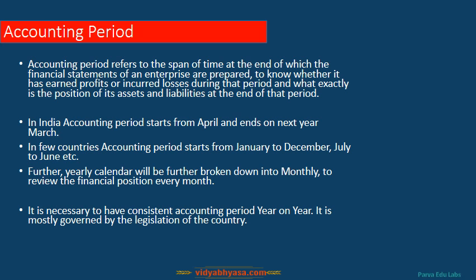The next concept is the Accounting Period Concept. Accounting period refers to a stipulated time for which financial statements are prepared — generally one year. In India, the financial year starts from April 1st and ends on March 31st of the following year. In some countries it runs from January to December, and in others from July to June. Every year, people need to know the profit for that one year. In India, the financial year starts on 1st April and ends on 31st March of the next year.